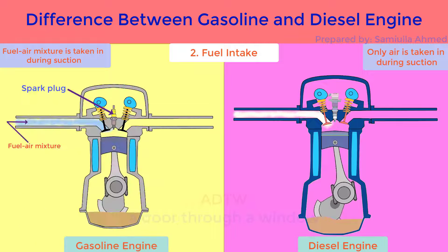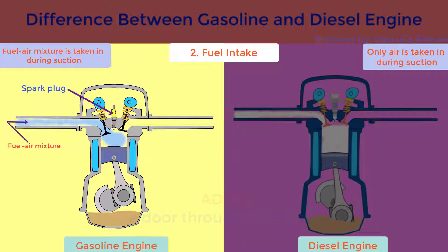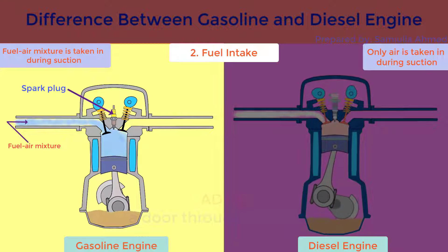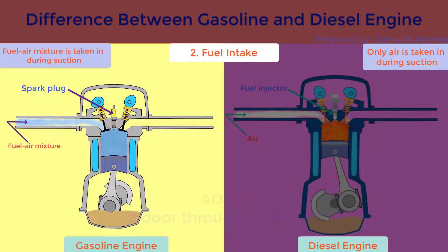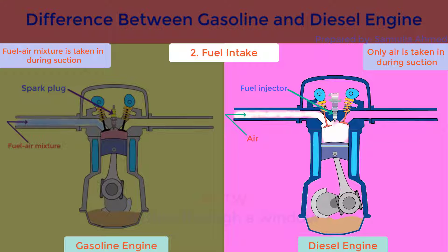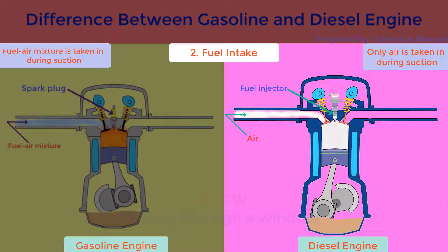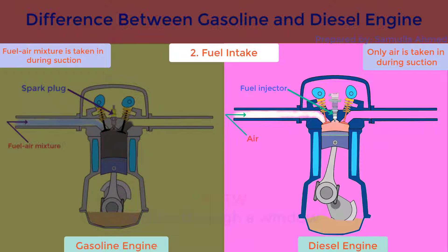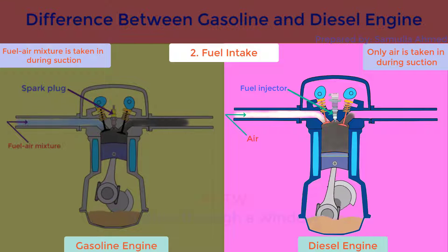Fuel intake. In gasoline engine, fuel-air mixture is admitted during the suction stroke. Air and fuel are mixed in the carburetor before they enter into the cylinder. In diesel engine, only air is admitted during the suction stroke and fuel is fed into the cylinder by fuel injector, which injects the fuel at high pressure at the end of compression stroke.